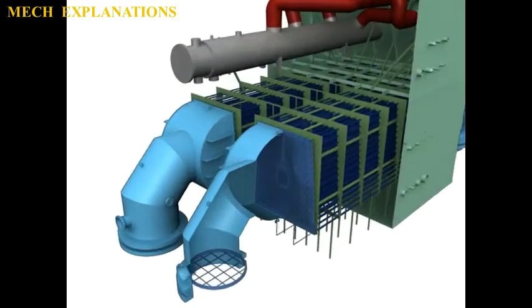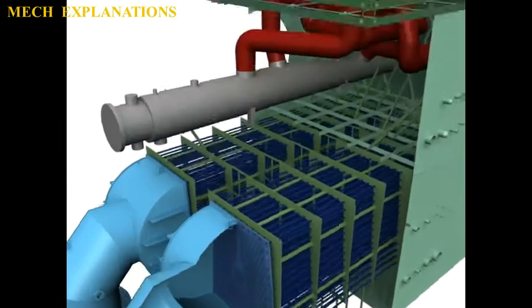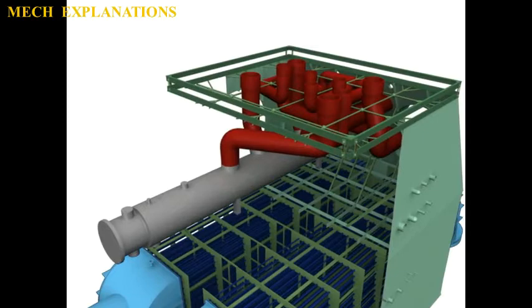For example, a refrigerator uses a condenser to get rid of heat extracted from the interior of the unit to the outside air.